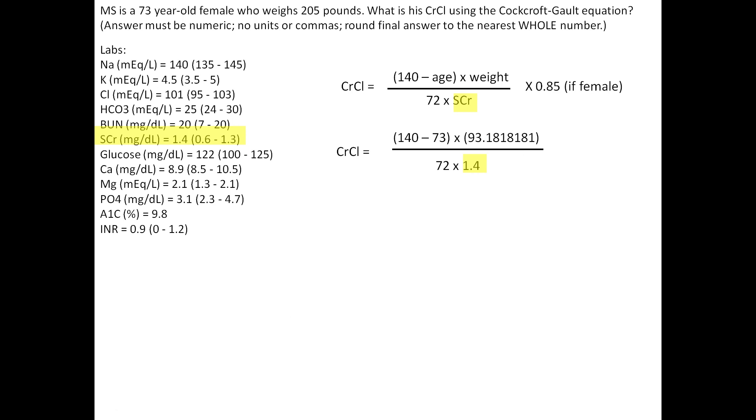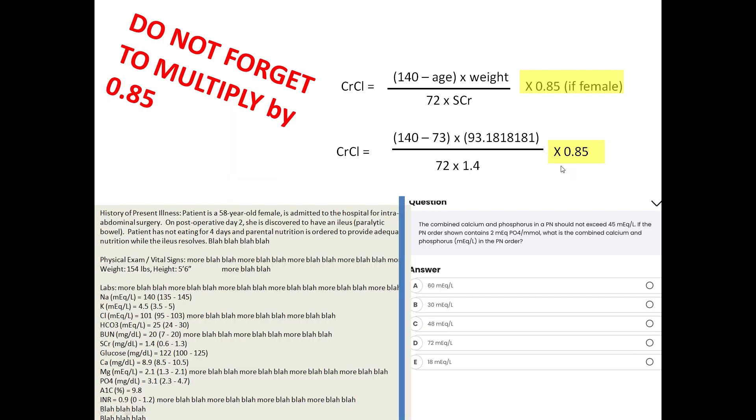Now you divide all of that numerator by the quantity 72 times serum creatinine. The serum creatinine is given in the labs, which is 1.4. Because patient is female, you have to multiply by 0.85. Please do not forget this. Please do not forget to multiply by 0.85.